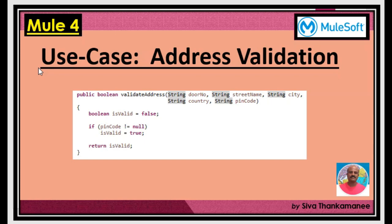We have a use case called address validation. You have the infrastructure and everything needed to validate a given address. It's a simple piece of code that returns a boolean — yes or no. The method name is validate address, with parameters like door number, street name, city, country, and pin code. You write a routine or algorithm that returns true if the address is valid and false if it is invalid.